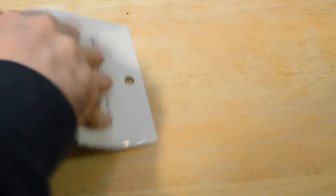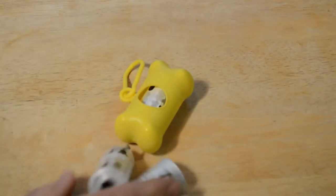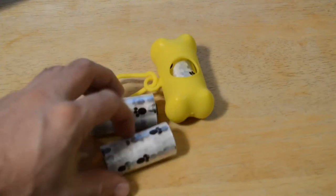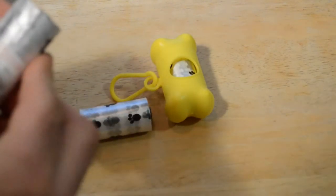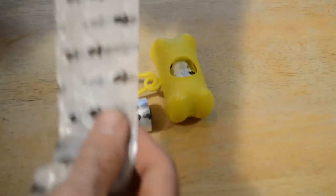Everything at Daiso is $1.50. Pet waste bags at least on Amazon are quite expensive, so for $1.50 getting tons of these little doggy waste bags I think is a great deal.